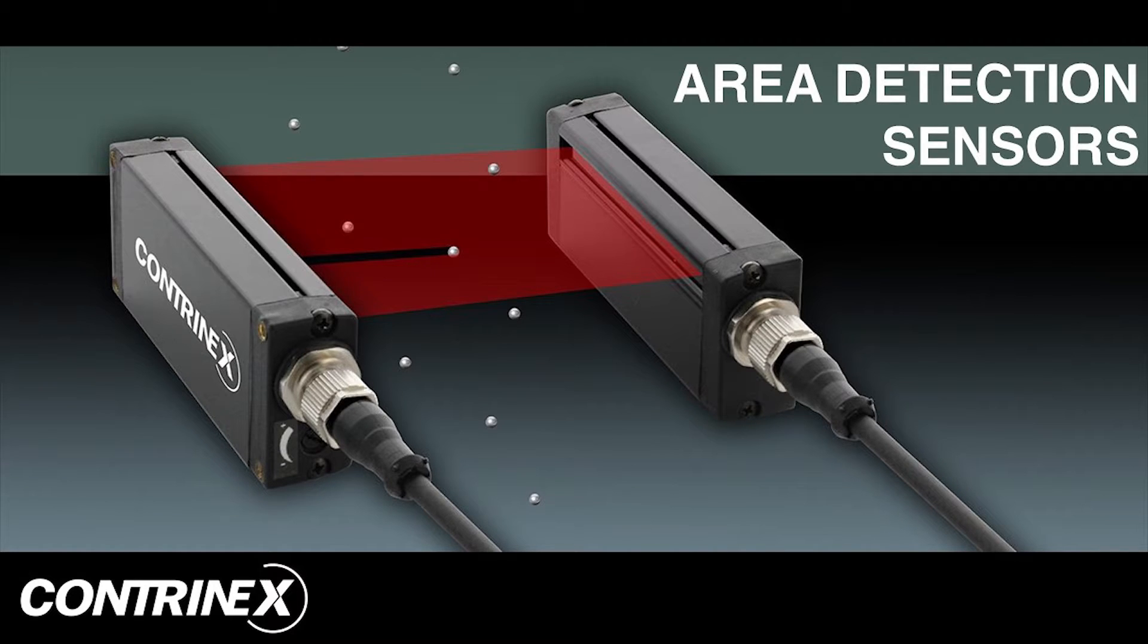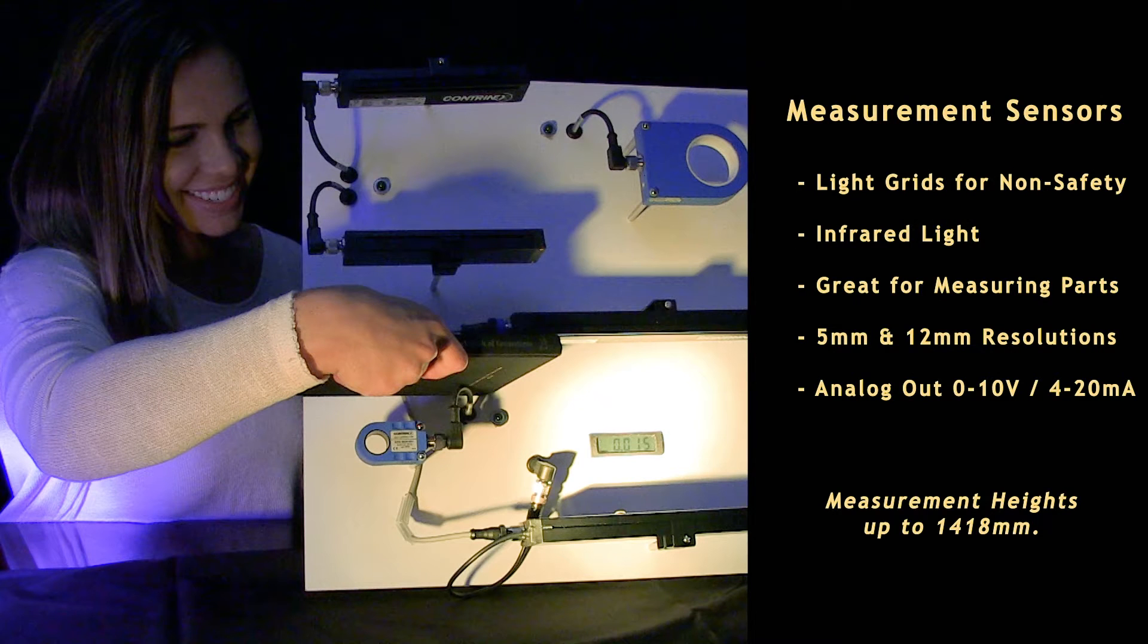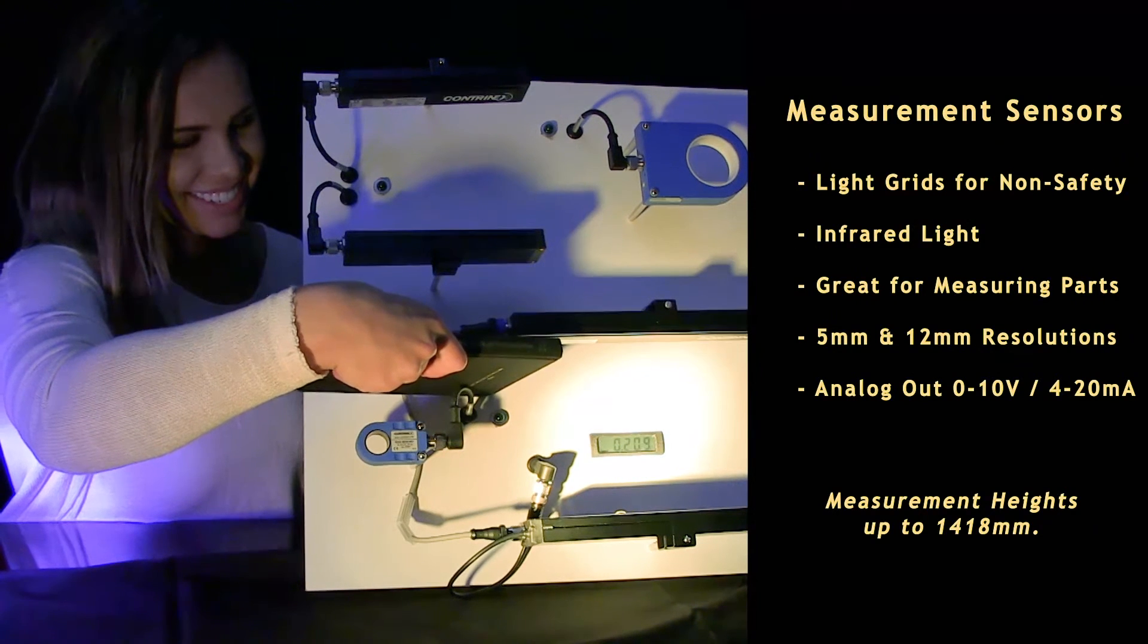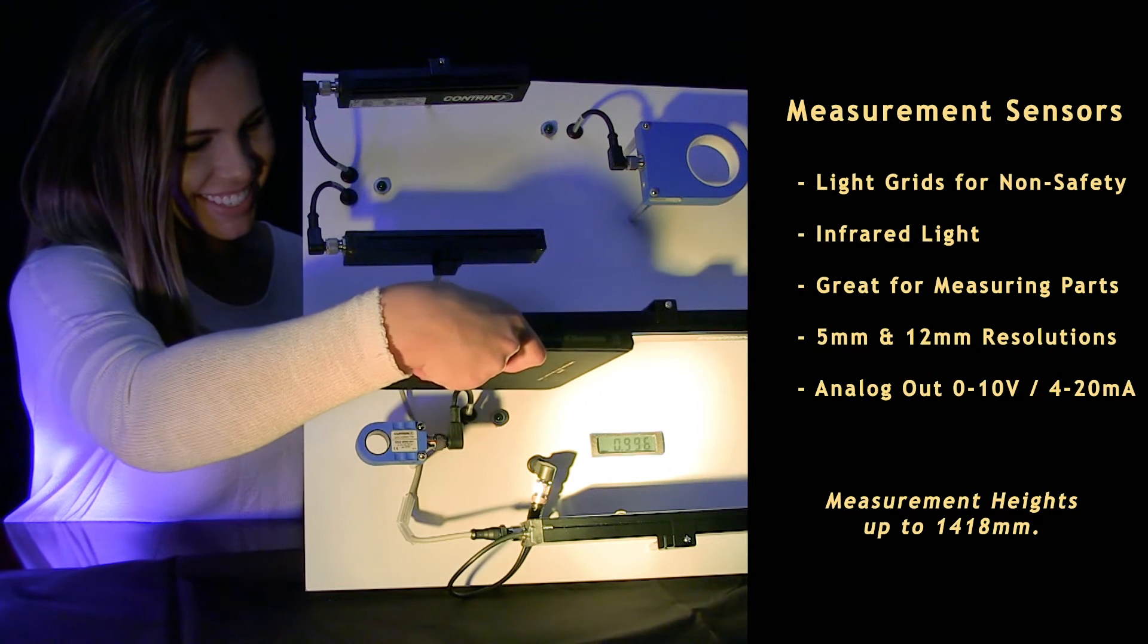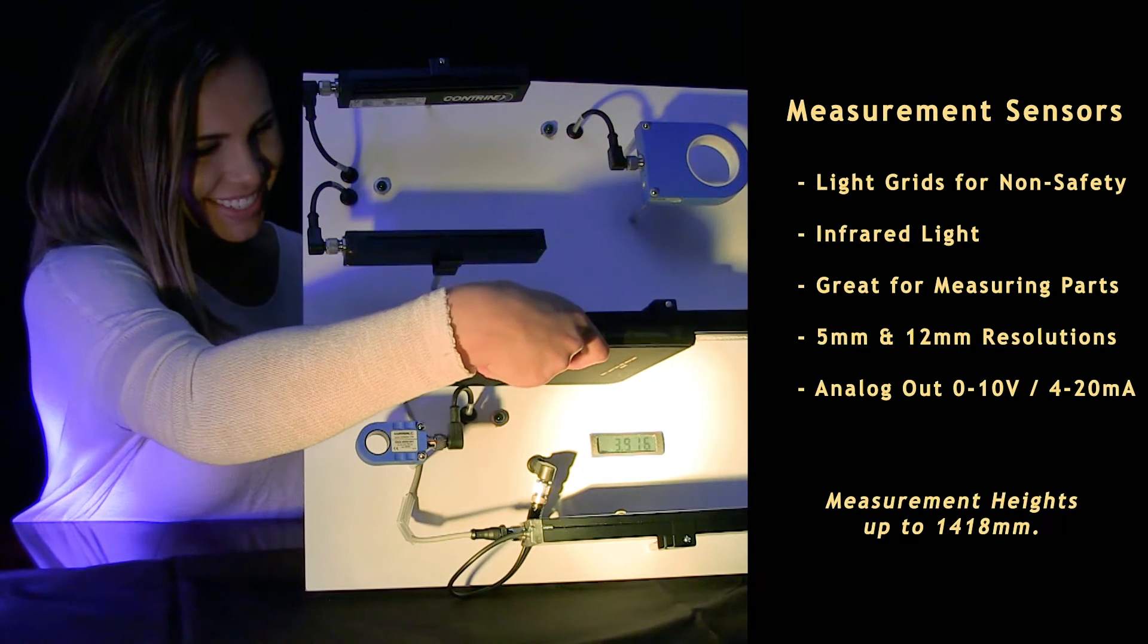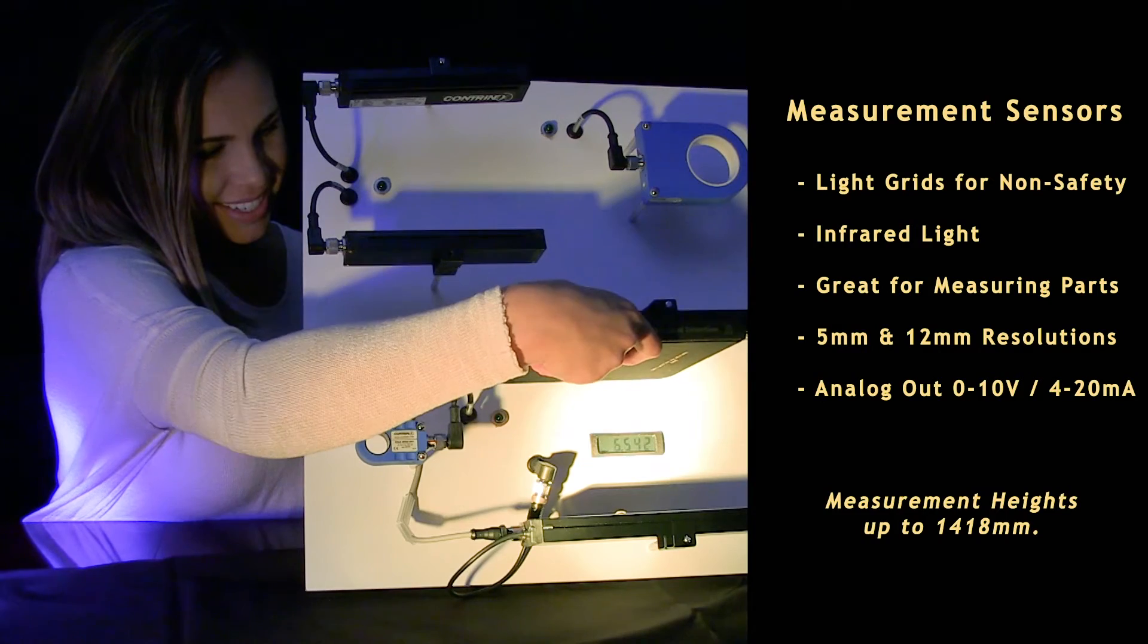CONTRANEX has added to their area detection family, introducing measurement sensors, infrared light grids designed for non-safety applications such as part measuring, packaging, and general applications.